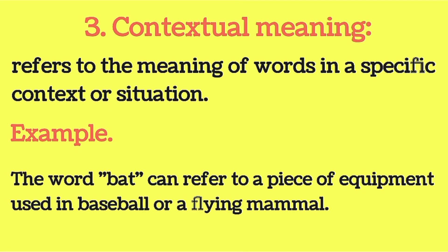The third type of meaning is contextual meaning. Contextual meaning refers to the meaning of a word in a specific context or situation. For example, the word 'bat' can refer to a piece of equipment used in baseball or a flying mammal. So this kind of meaning is called contextual meaning.